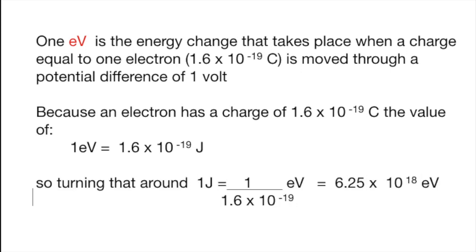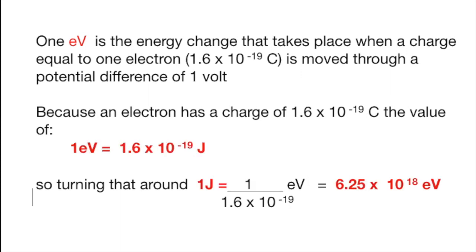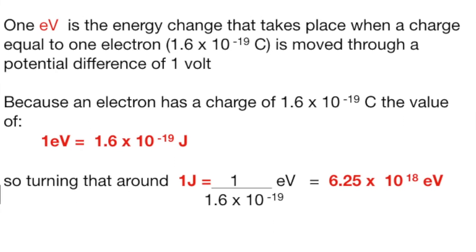Turning that round, or rather inverting it, one joule therefore is 1 over 1.6 times 10 to the minus 19 eV, which is equal to 6.25 times 10 to the 18 eV.